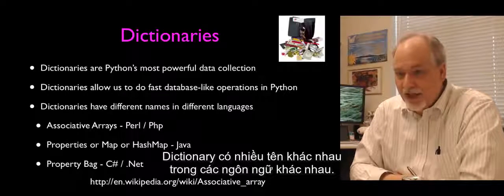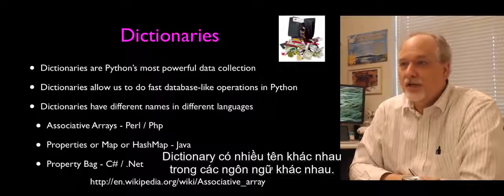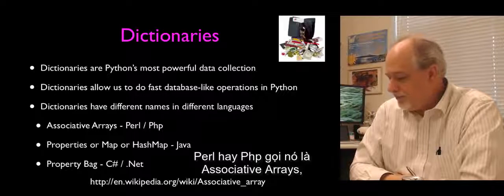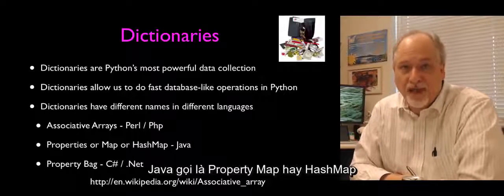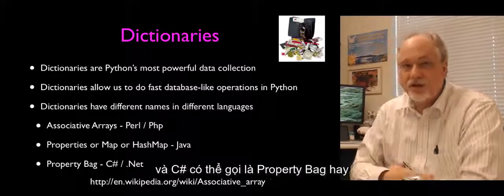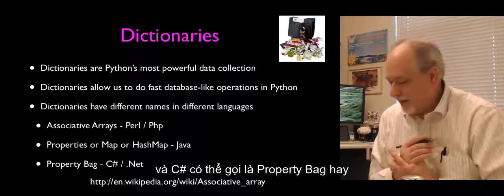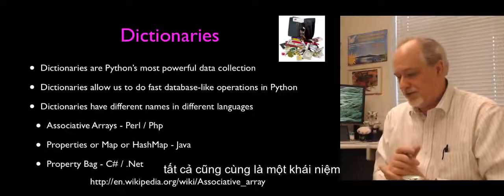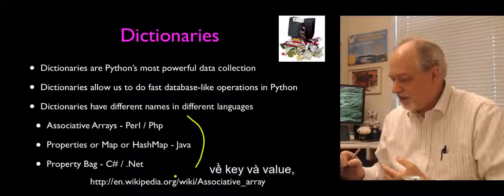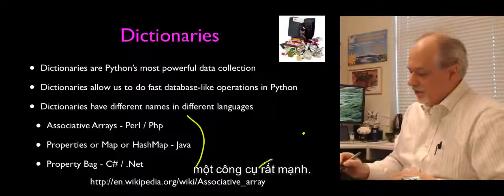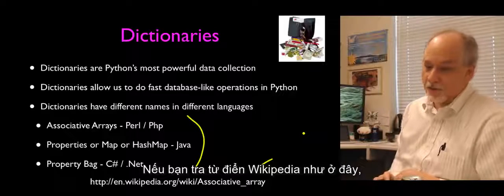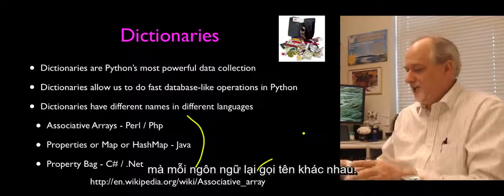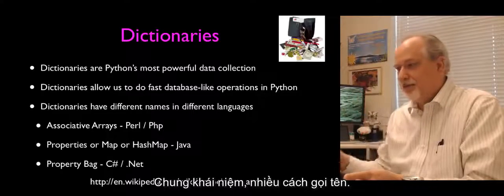Dictionaries have different names in different languages. Perl or PHP would call them associative arrays. Java would call them a property map or a hash map. C# might call them a property bag or an attribute bag. They're all the same concept — keys and values — just a very powerful concept across all these languages, just given different names.